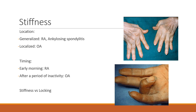In your analysis of stiffness, consider the location: if it is generalized, think about inflammatory conditions like rheumatoid arthritis or ankylosing spondylitis. If localized to one or two joints, consider osteoarthritis and the aging process. The timing of stiffness is also important: morning stiffness is a feature of rheumatoid arthritis, while stiffness after a period of inactivity — for example, difficulty extending the knee after sitting — goes with osteoarthritis.